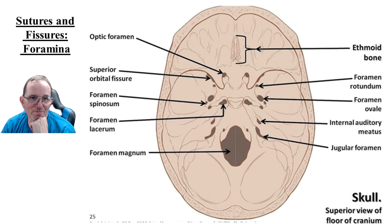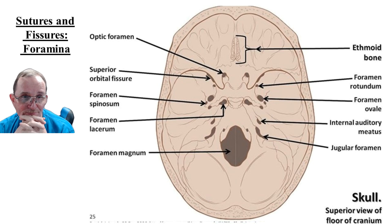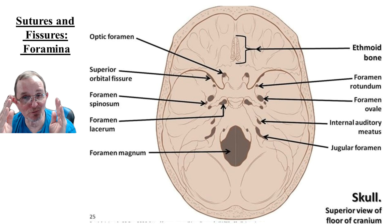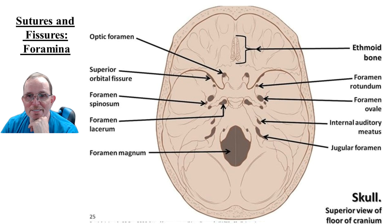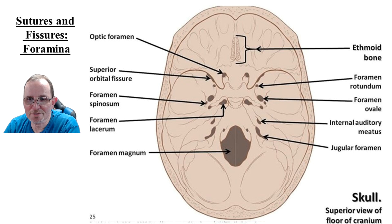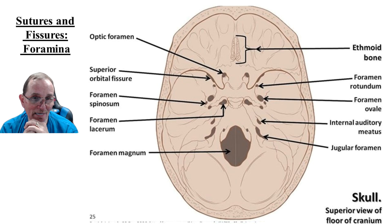Sutures, fissures, and foramina. Foramina is just the plural of foramen — a foramen is a hole. A canal is a foramen that has a long run through bone like a tunnel. They call this the optic foramen, but most of the time you hear it referred to as the optic canal. The foramen magnum is the opening where the brain stem transitions into the spinal cord.